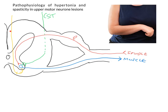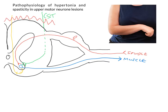Many of these descending inhibitory pathways are actually themselves controlled by the cortex, by descending cortical projections going down to, say, the reticular formation in the brainstem. And if you suffer from a cortical lesion — say, a stroke — what actually happens is not only do you destroy these excitatory inputs going down through the corticospinal tract, but you also interrupt these descending inhibitory inputs.